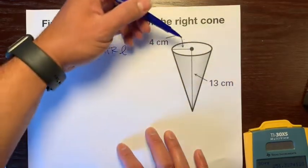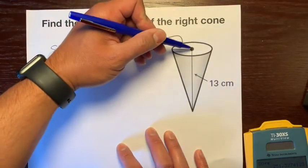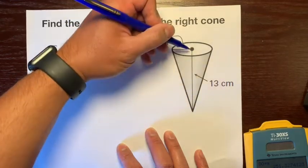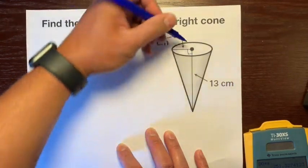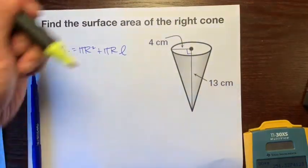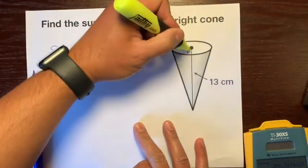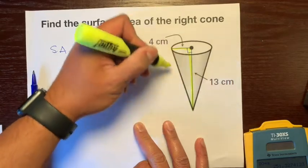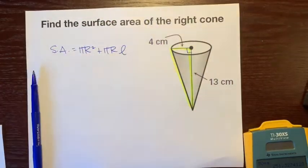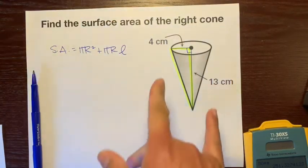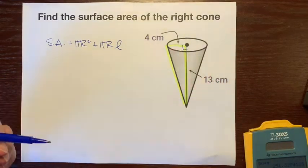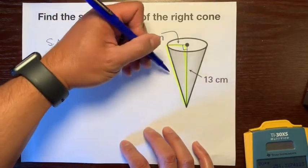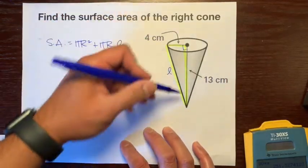If you notice, the radius and the height make a right angle, so we have a right triangle. Let's highlight it so you can see it better - from here to here. When we have two sides of a right triangle, we can always use the Pythagorean theorem. They give us two legs. Let's find this hypotenuse. Let's call it L for the slant height.